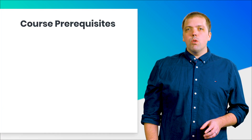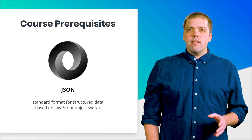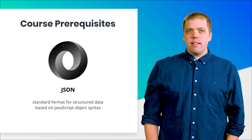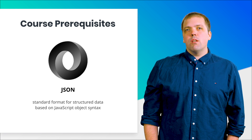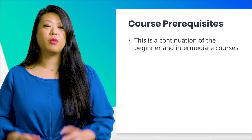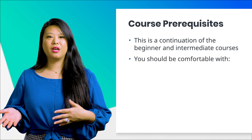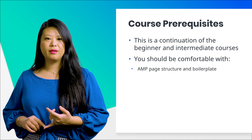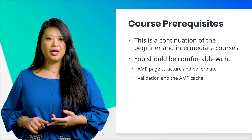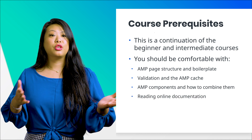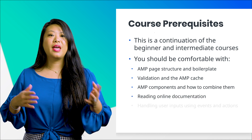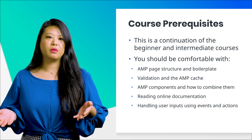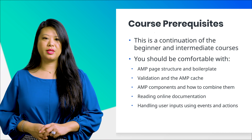In this course, we'll be using data in the JSON format. JSON is a standard format for structured data based on the JavaScript object syntax. You'll need to use JSON to complete this course. This course continues from where the previous courses left off. By now, you should be comfortable with AMP page structure and boilerplate, validation and the AMP cache, AMP components and how to combine them, using AMP documentation, and handling user input using events and actions. If any of these topics are unfamiliar, you should review the previous courses before continuing with this one.